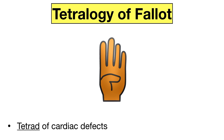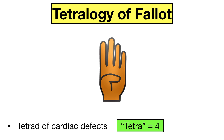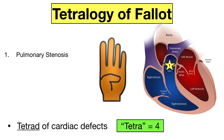The fourth cyanotic defect is tetralogy of Fallot. Hold up four fingers, as tetralogy of Fallot is a tetrad of four heart defects. The prefix tetra means four, so four fingers will help you remember it's a tetrad. The tetrad includes pulmonary stenosis — narrowing of the pulmonary valve and main pulmonary artery — right ventricular hypertrophy, which is thickening of the ventricle wall, and an overriding aorta, which refers to the enlarged aortic valve that seems to open from both ventricles.